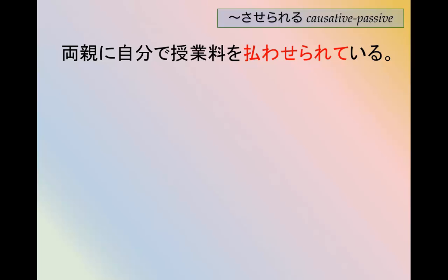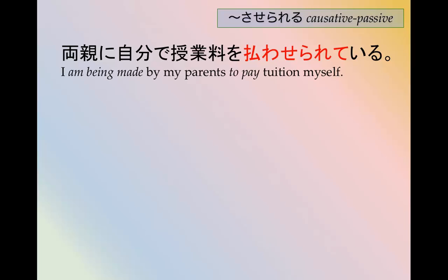両親に自分で授業料を払わせられている。 払わせられる is 'to be made to pay.' So this sentence is: I am being made by my parents to pay tuition by myself.